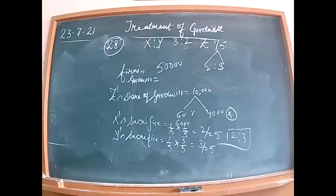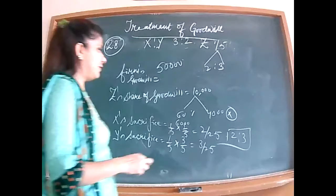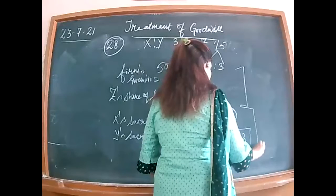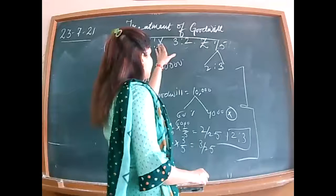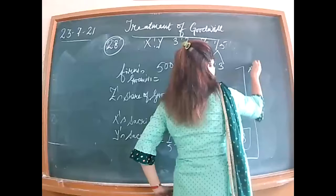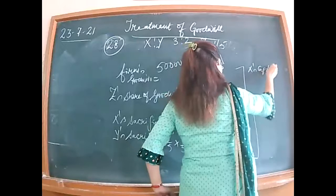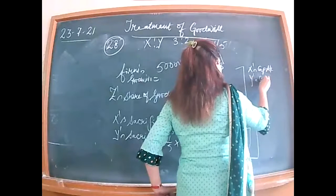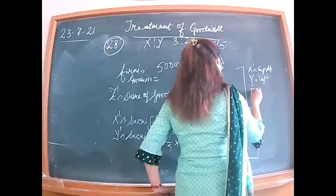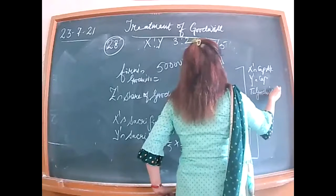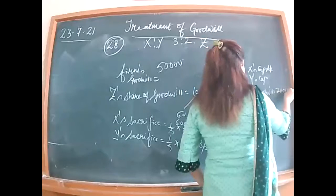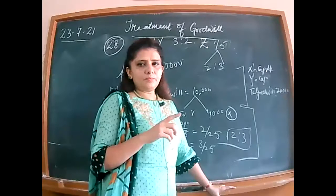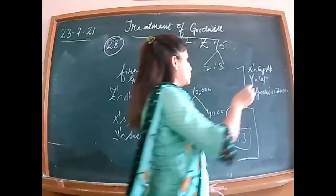Start the question by writing off old goodwill: X capital debited, Y capital debited, to Goodwill — in their old ratio. Being already existing goodwill written off in old ratio. 20,000 in ratio 3:2 gives 12,000 to X and 8,000 to Y.